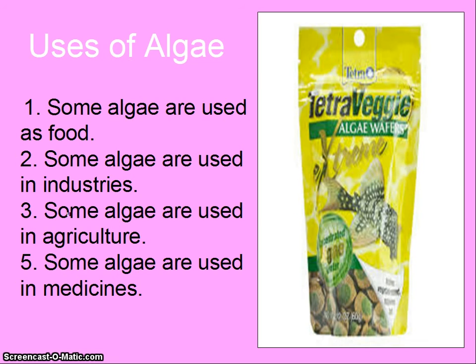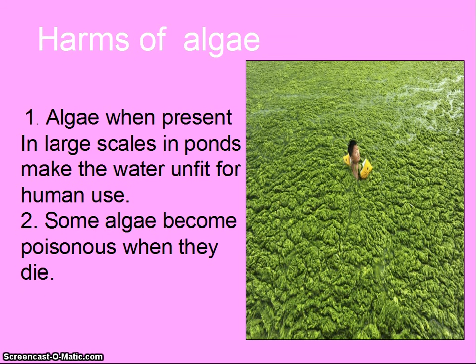Uses of algae: some algae are used as food, some are used in industry, some in agriculture, and some in medicines. Harms of algae: when present in large quantities in ponds they make water unfit for human use, and some algae become poisonous when they die.